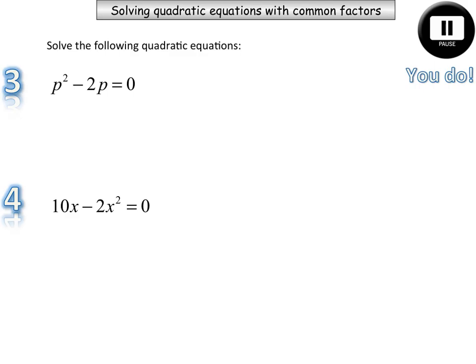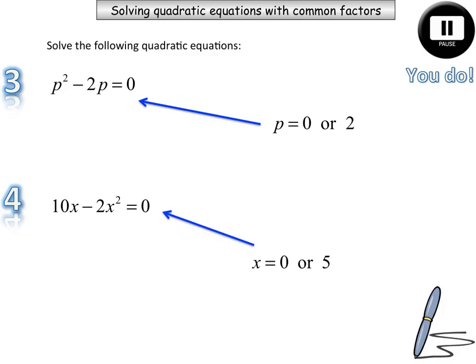OK, question 3 and question 4, again factorise those, and then solve those quadratic equations, and then check your answers. OK, so for the first one, you should have got p is equal to 0 or 2, and the next one, you should have solved this quadratic to get x equals 0 or 5.